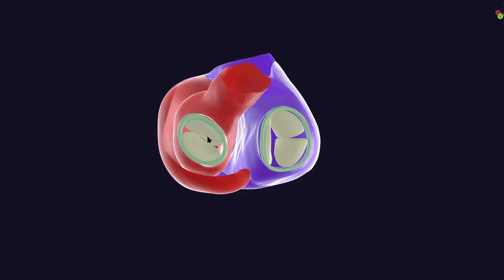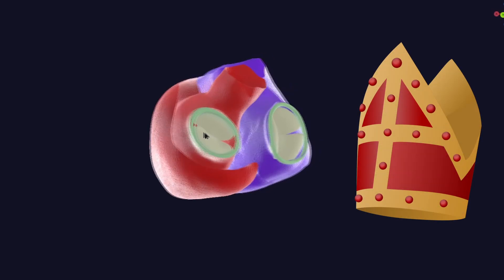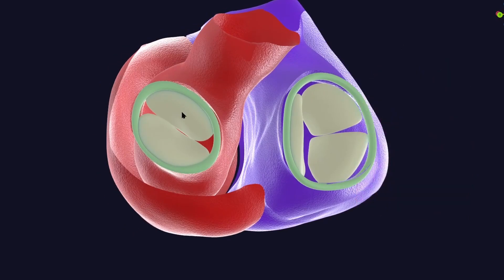The word 'mitral' comes from the term 'mitre,' which is a particular shaped hat worn by a bishop. Because the valve looks like that hat, it is called the mitral valve, and because it has two cusps, it is also called the bicuspid valve.